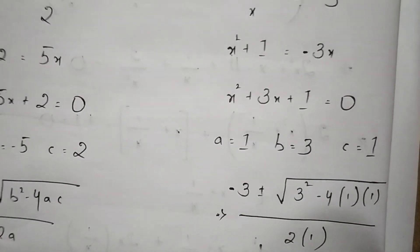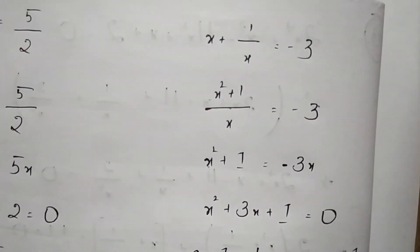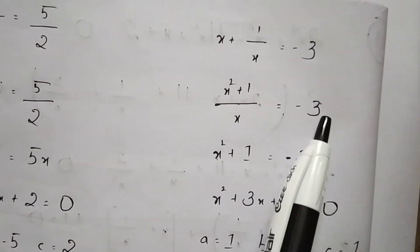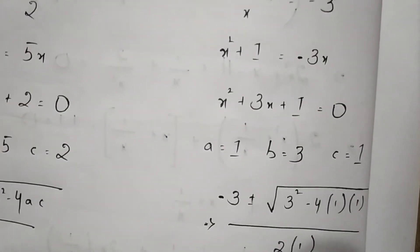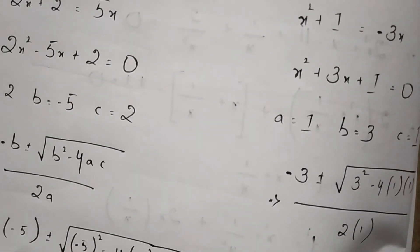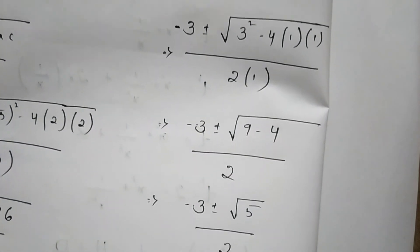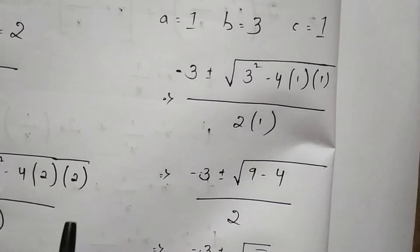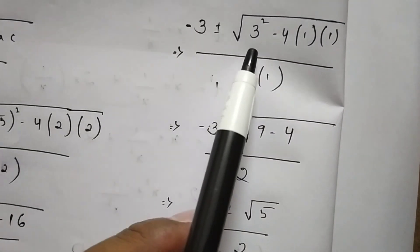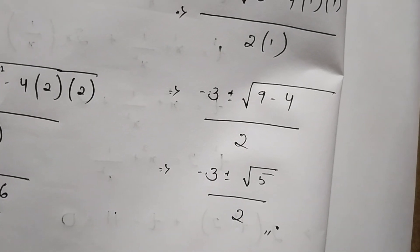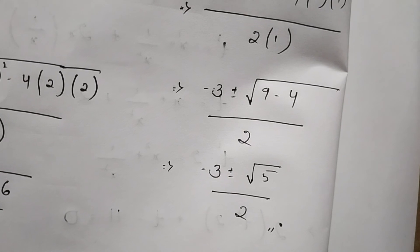On substituting t = -3, we follow the same procedure. Taking LCM, we get x² + 1 = -3x, so x² + 3x + 1 = 0. From this, the value of a = 1, b = 3, and c = 1. Substituting into the quadratic formula, we get x = (-3 ± √(9 - 4)) / 2 = (-3 ± √5) / 2. We cannot simplify this further, so we stop here.